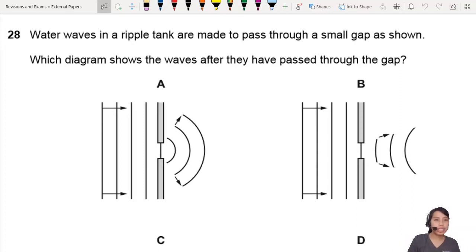Here's a question about diffraction. So you have water waves pass through a small gap. Why did they say the word small? That's very interesting.